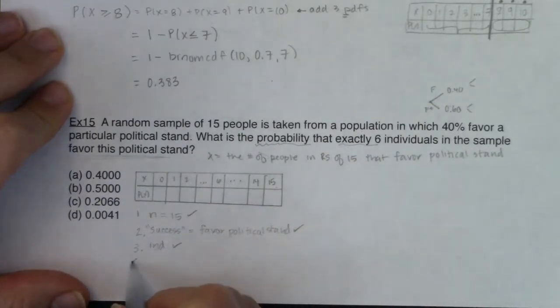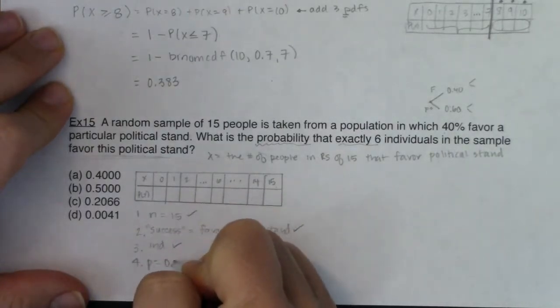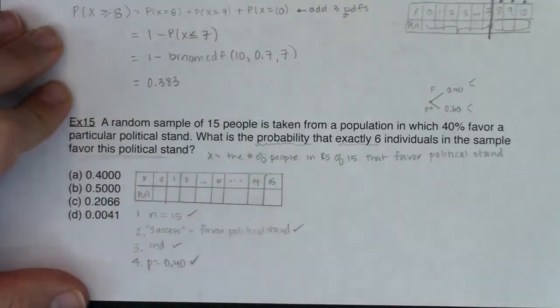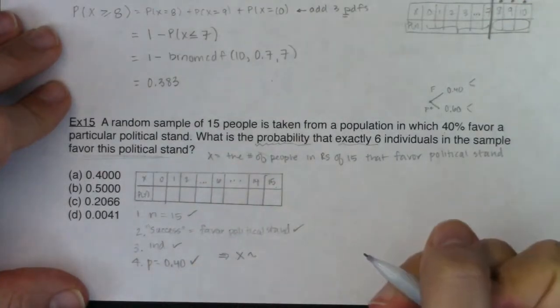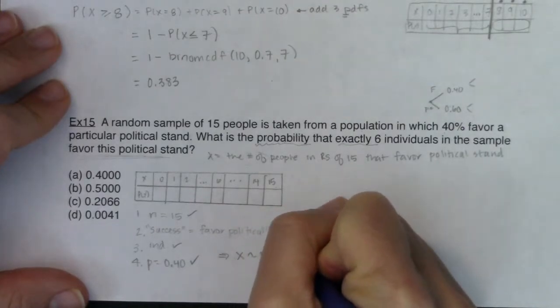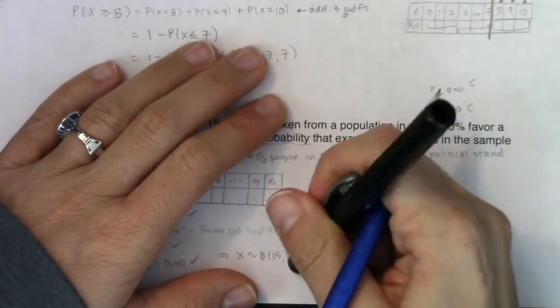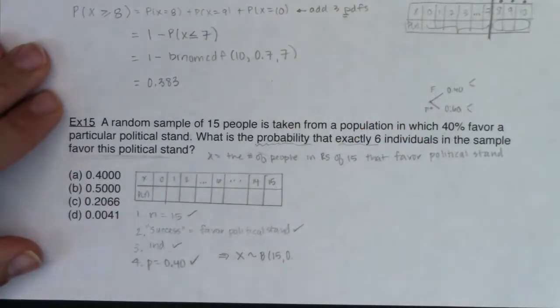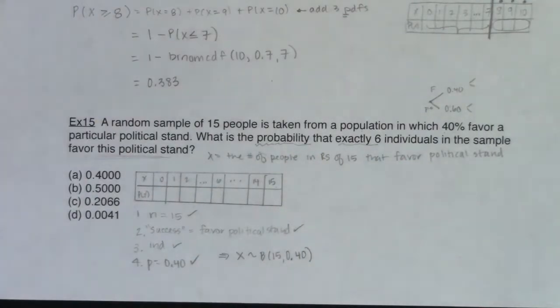And then the last thing is do I have a probability of success? It said, yeah, if you go talk to anybody, there's about a 40% chance they're going to favor this political stand. So you see, I get through all four of those check marks and that's great because then I know my variable. Instead of making this table, I can just write the squiggles. It's distributed binomially. We've got 15 folks and not 17, excuse me, a 40% chance of success. I think I was using the S letter from success and putting a 17 there. My brain got a little mixed. So we got that.